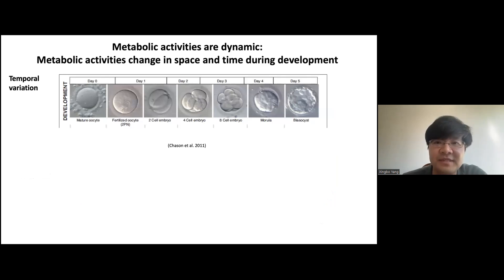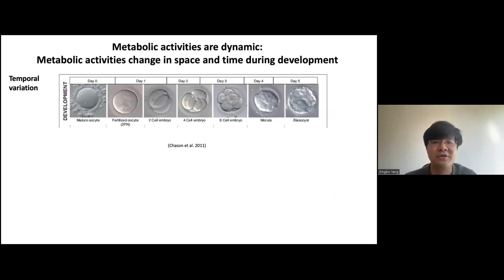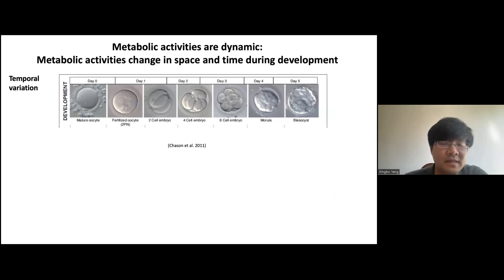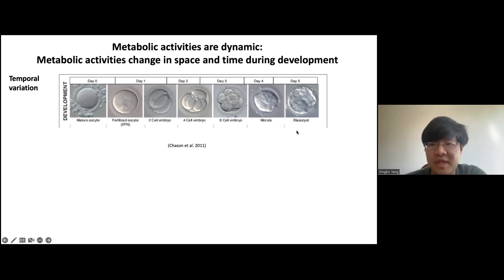Metabolic activities are dynamic inside cells — for example, the activities of metabolism change in space and time during processes such as embryo development, which displays very dynamic behaviors in space and time. There are temporal variations of metabolism during this process. What you're looking at here is the development of a mouse embryo that starts with a mature egg or oocyte, and upon fertilization we have a one-cell embryo, and upon several rounds of divisions around day five, we have a blastocyst.